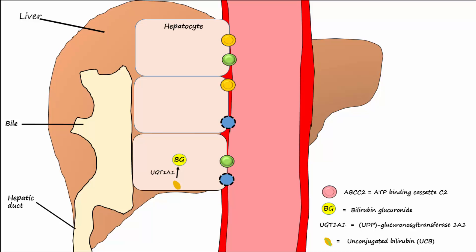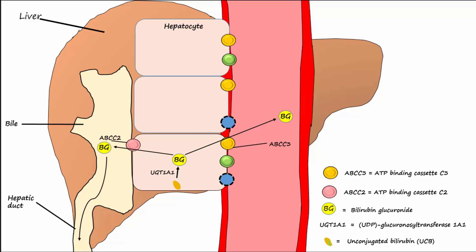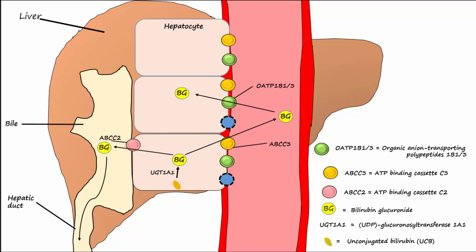Bilirubin glucuronide, or BG, is secreted into the bile mainly by ATP binding cassette C2, abbreviated ABCC2, and then exits the liver by way of the hepatic duct. Some of the intra-hepatocyte BGs are secreted back into the blood by the basolateral transporter ATP binding cassette C3, where they can be taken back into downstream hepatocytes by organic anion transporting polypeptides 1B1 or 1B3. The bilirubin glucuronide then exits the hepatocyte via ABCC2 to enter the bile and hepatic duct. It is believed that this reuptake and secretion loop prevents saturation of upstream hepatocytes with bilirubin.